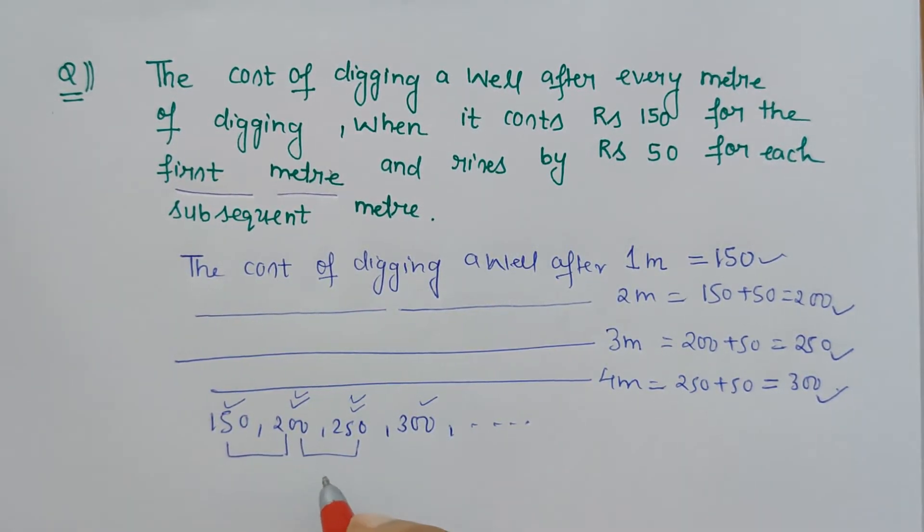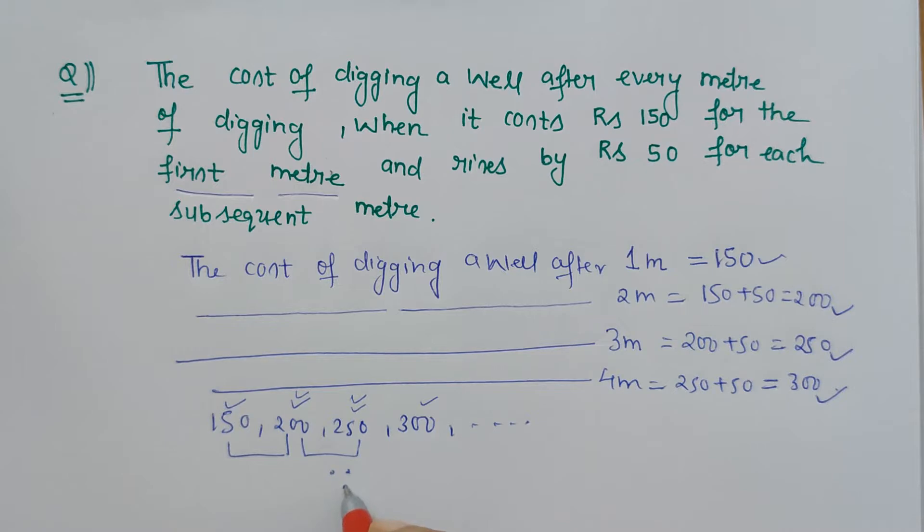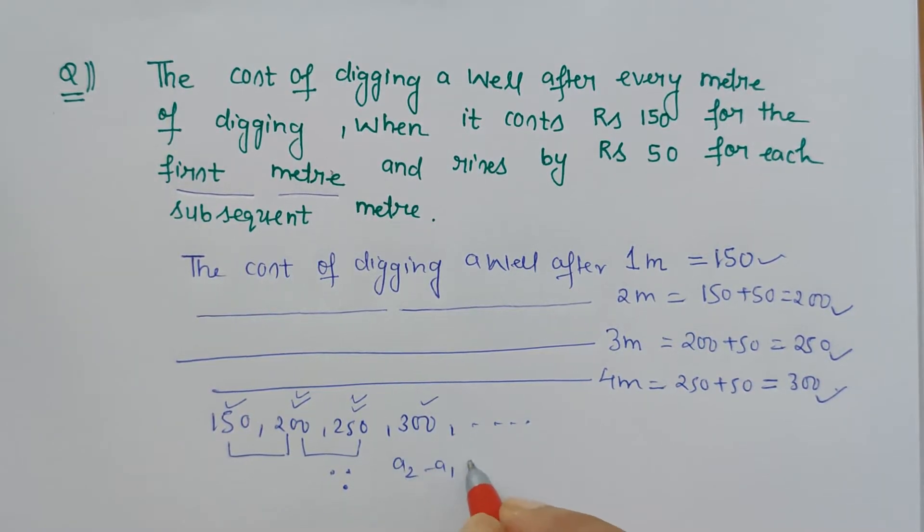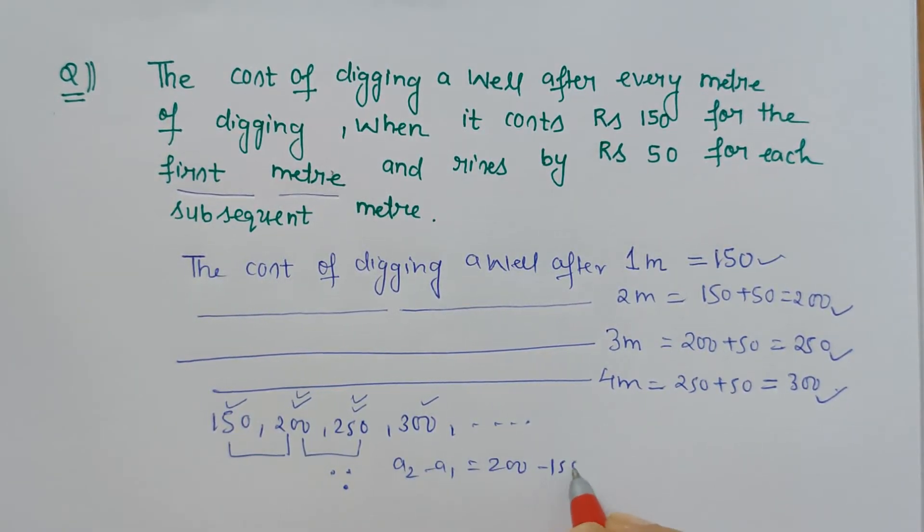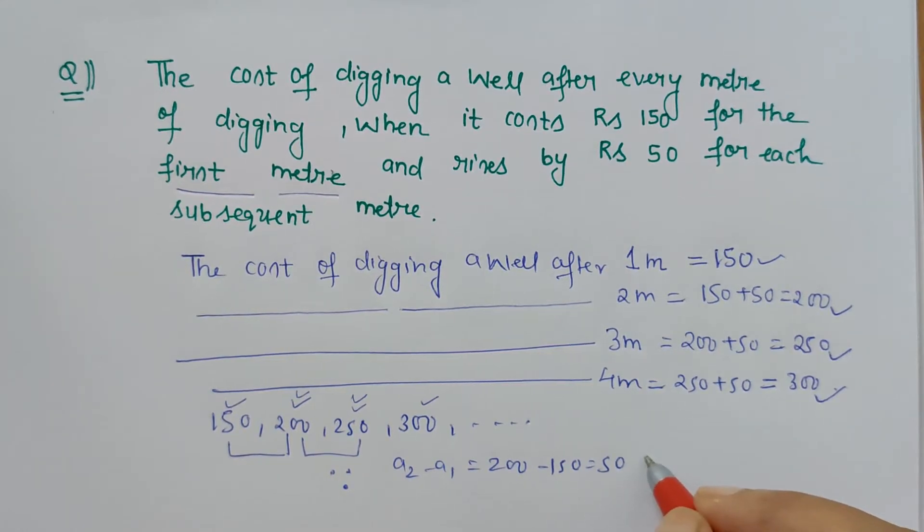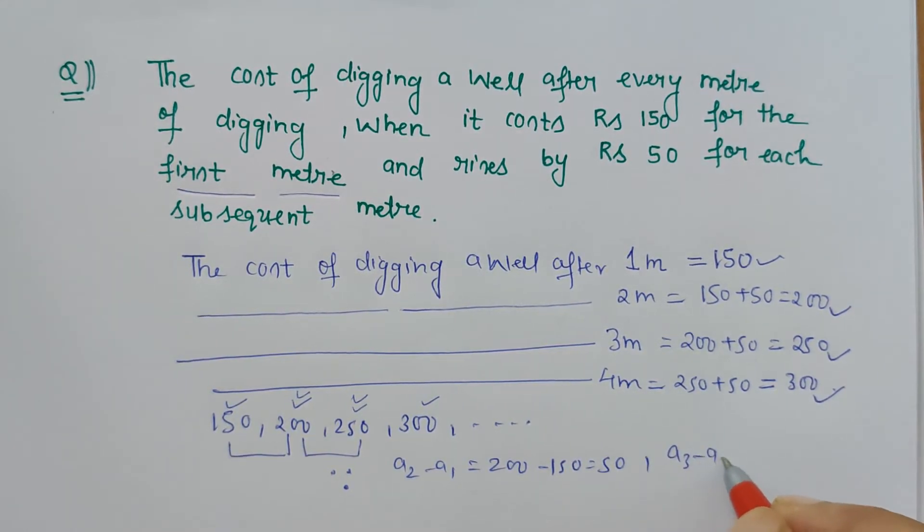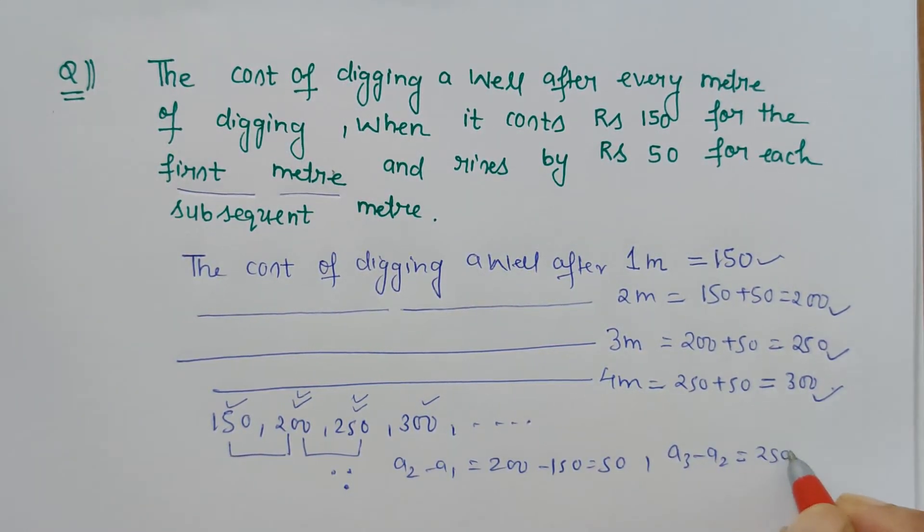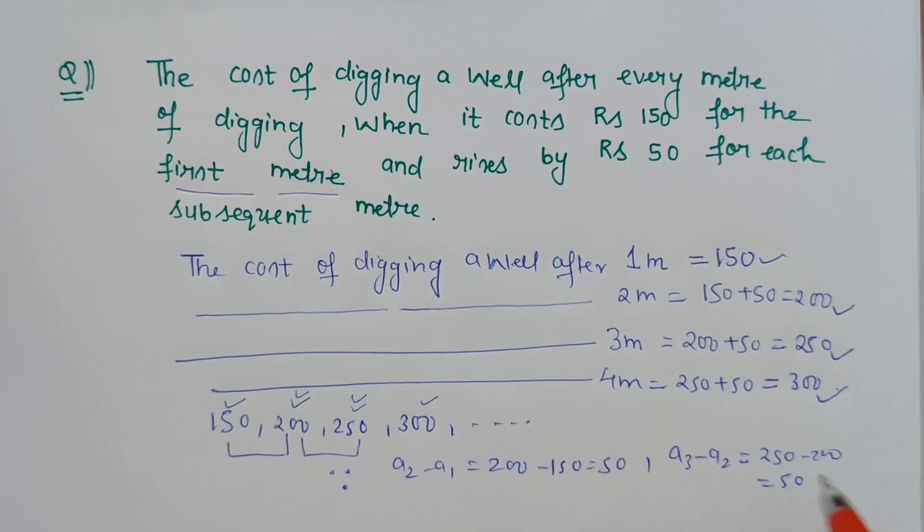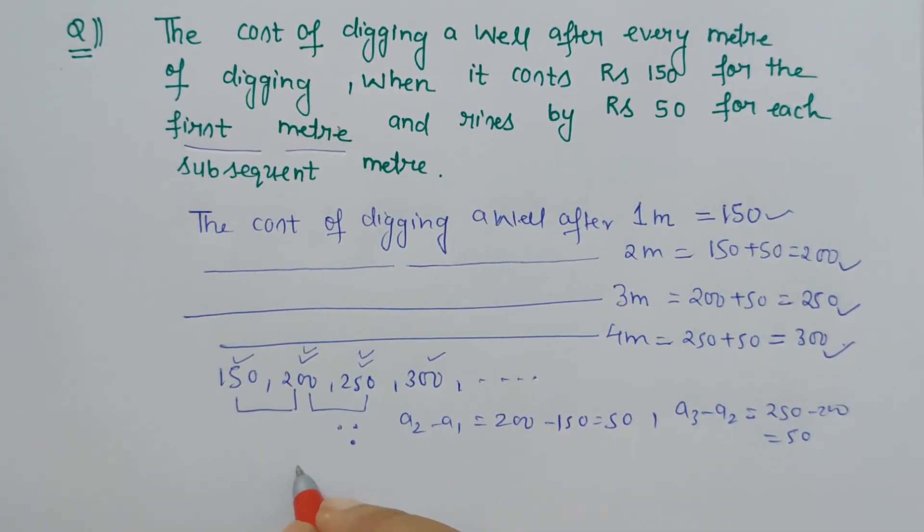So what you will write: since a₂ minus a₁ which is 200 minus 150 is 50, likewise a₃ minus a₂, when we saw 250 minus 200 is 50. Therefore the situation forms an AP.